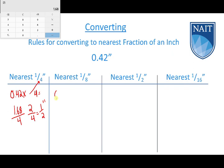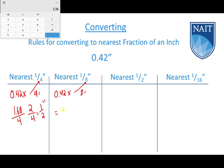Now let's look at converting to the nearest eighth. We take 0.42 and multiply it by 8. Using the calculator: 0.42 times 8 equals 3.36 eighths. Looking one place to the right of the decimal, I see a 3, so I round down. The result stays at 3 eighths. So 0.42 inches to the nearest eighth of an inch is three eighths.